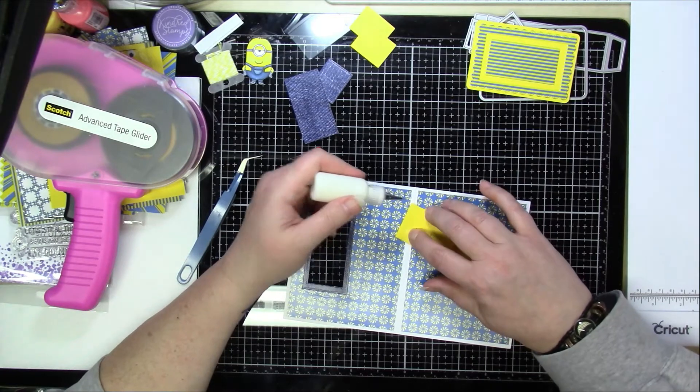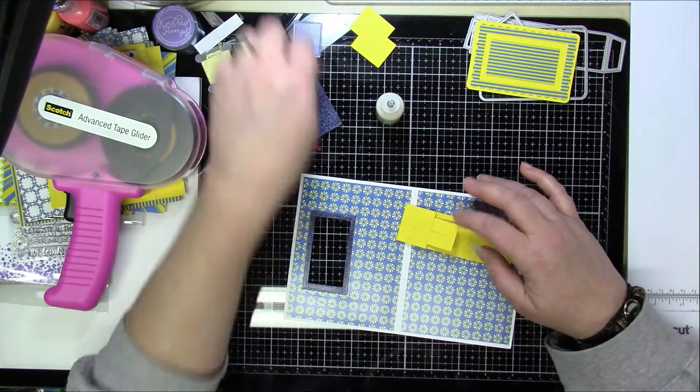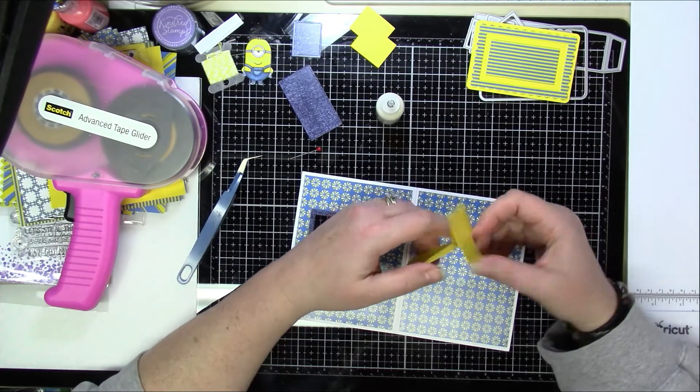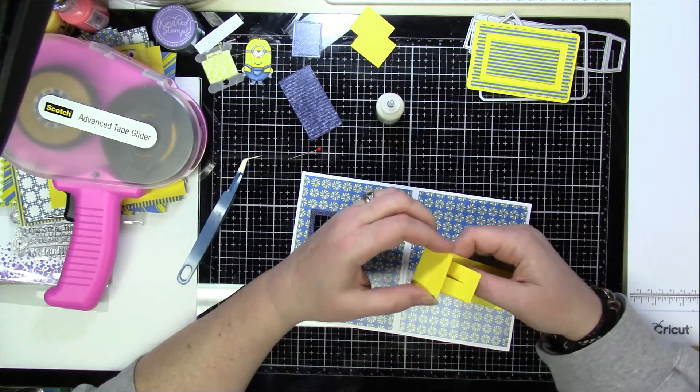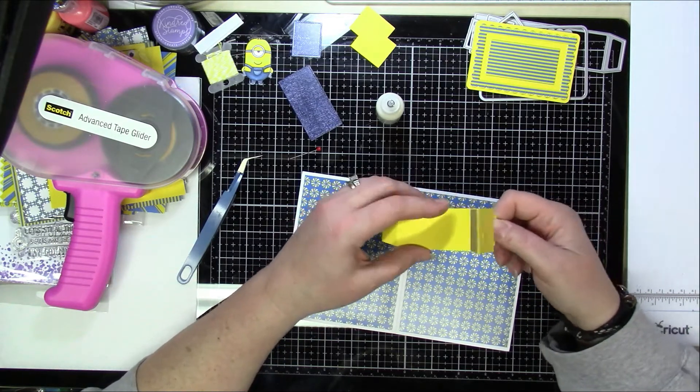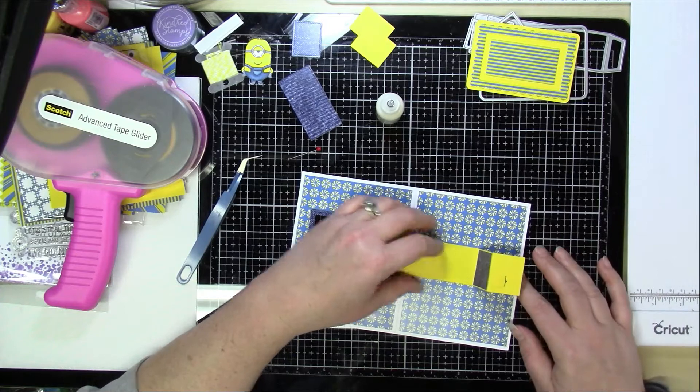So here I'm just gluing that down to make sure that stays there. Now I don't put a decorative piece over that because that's going to be covered up with the piece that's going to have the image on there and stuff. So that's it. That's the mechanism and that's kind of how it works.